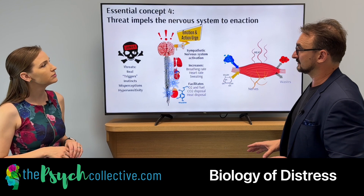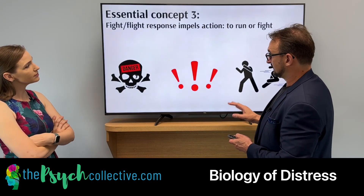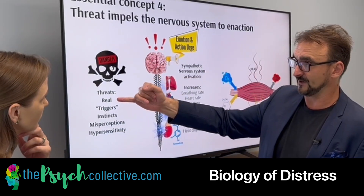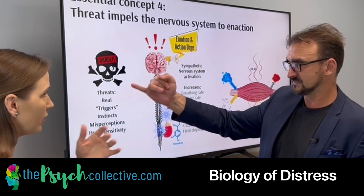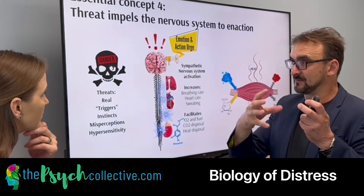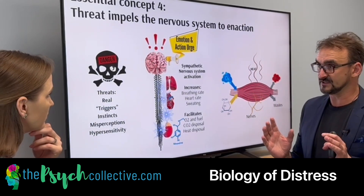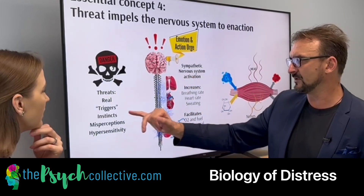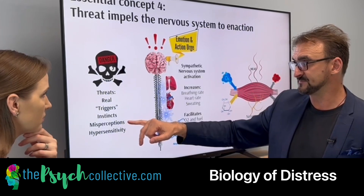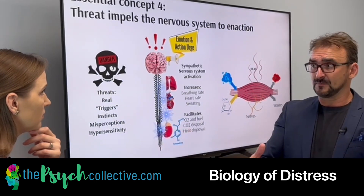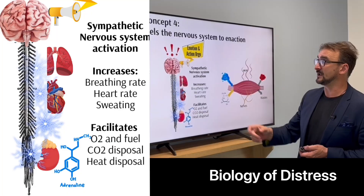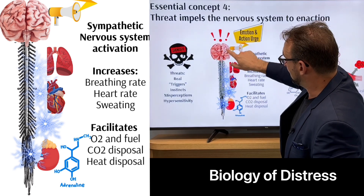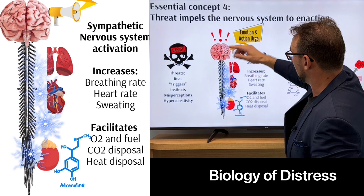In terms of what the threat is, it could be all kinds of things. It could be a real threat to your life — a snake on the ground in front of you. It could be an emotional trigger: not a threat to your life, but it's freaking you out nonetheless. It could be an instinct — you think something is dangerous or something sus is going on. You might have misread the situation, or you might be really hypersensitive, so the threat mightn't be that big but it still activates. When the brain gets this alarm, it does a bunch of things.